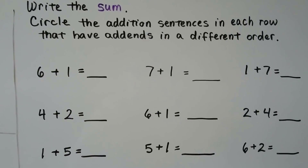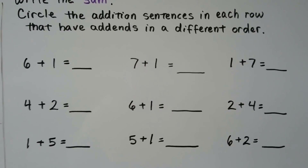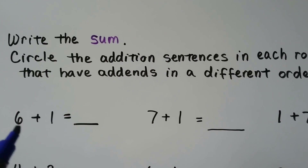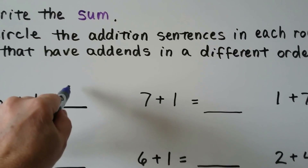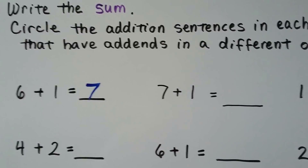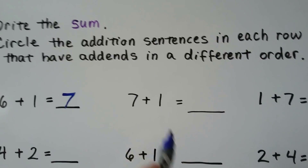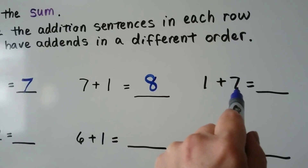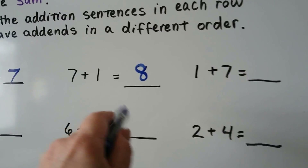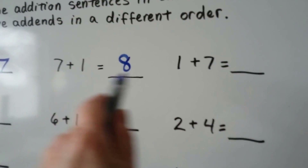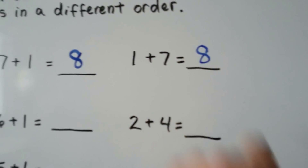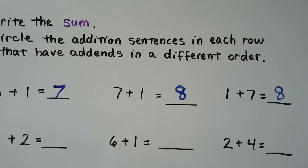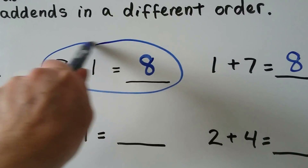Write the sum. Circle the addition sentences in each row that have addends in a different order. In this first row, 6 plus 1 more would be 7. 7 plus 1, that would be 8. 1 plus 7 — we have 1 and we add 7 more, which is the same as 7 plus 1 because it doesn't matter what order they go in — that's 8. Which two addition sentences in that row have the addends in different order? We've got this one and this one.